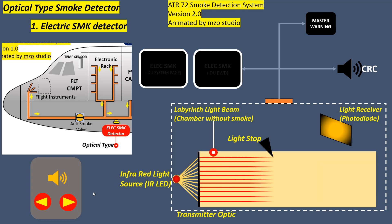The light source IR LED, the light trap, and the light receiver photo diode are arranged in such a way that the light from the emitter cannot reach directly the receiver. Brief light pulses are transmitted periodically by the IR LED into the measurement chamber.